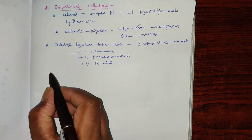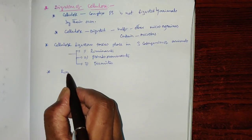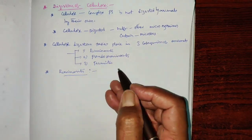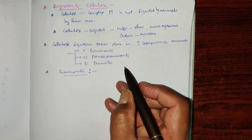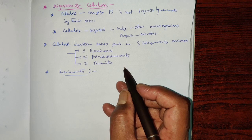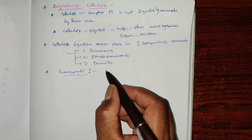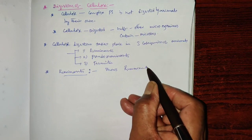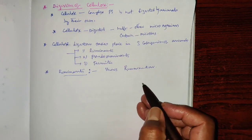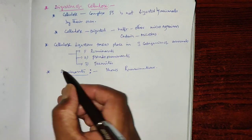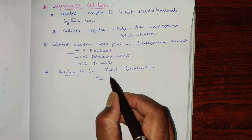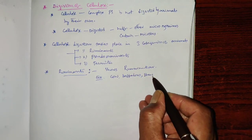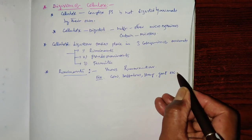The first category is ruminants. Rumination is the process in which the animal swallows food and then brings it back into the mouth while resting — this is called rumination. Examples of ruminants include cow, buffaloes, sheep, goat, and horse.